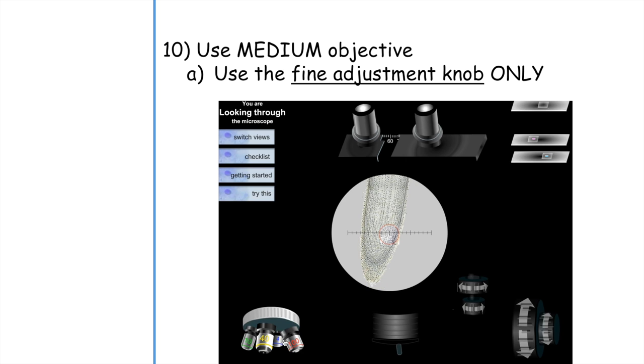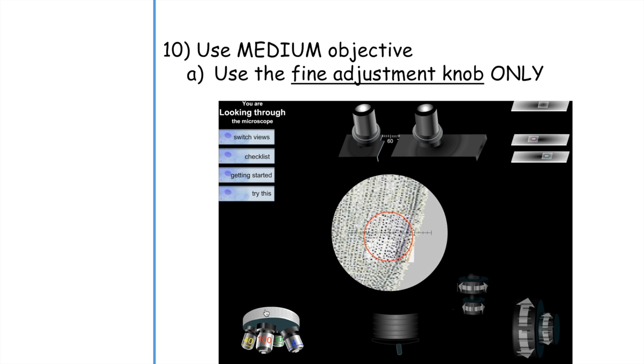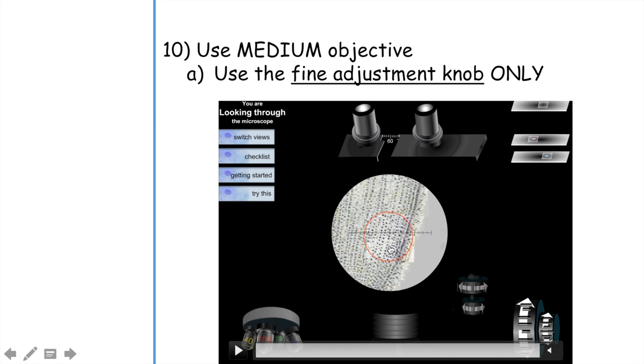Now we can go ahead and switch to the medium objective by using the nosepiece. And here's what we have. It does say to only use the fine adjustment knob. So you want to use only the fine adjustment knob. Now you're just fine-tuning. I like to go a little bit above and a little bit below so I can find where the best focus would be at that magnification. Now you're actually starting to see all the nuclei inside of these little boxes, which are the cells of the plant.